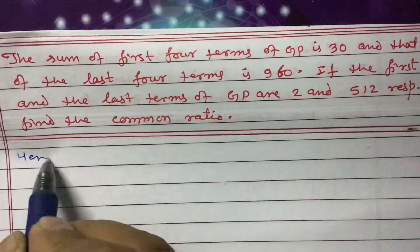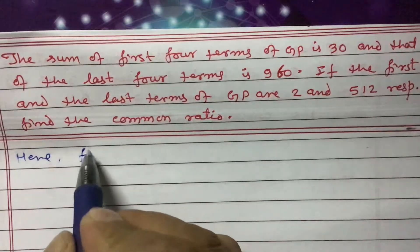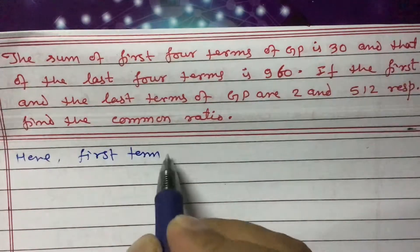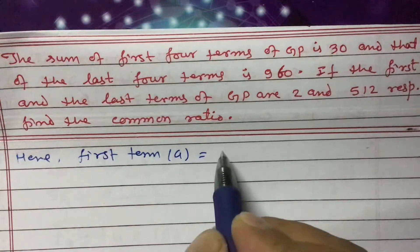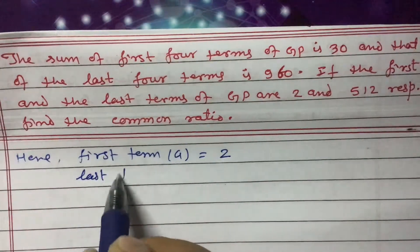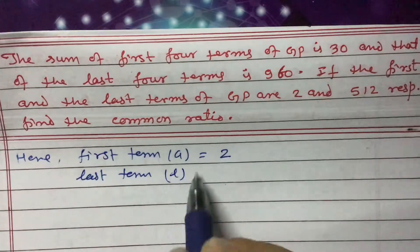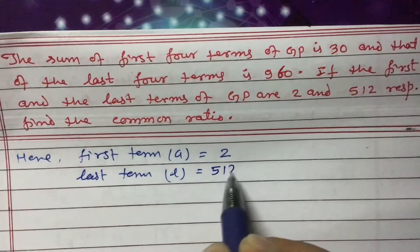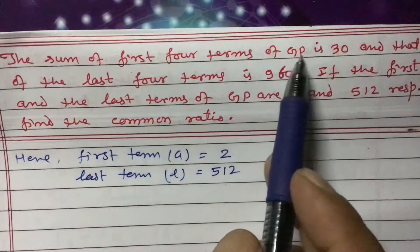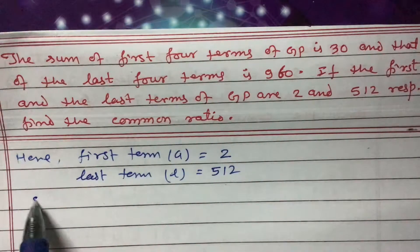So here we are given: the first term a equals 2, and the last term L equals 512. We are also given that the sum of the first four terms is 30.